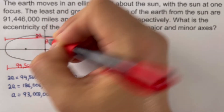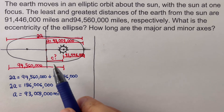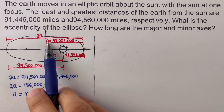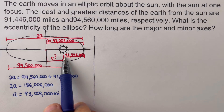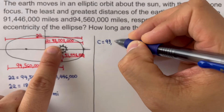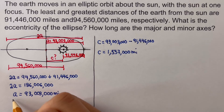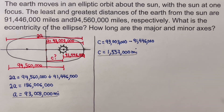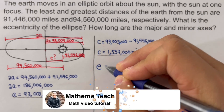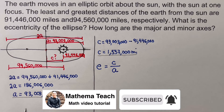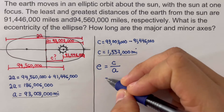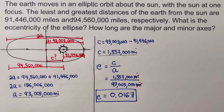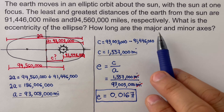To solve for c, we take the difference between a and the nearest distance of the Earth from the sun. Now we have both a and c — the two quantities needed for eccentricity. Plugging them into e = c/a, the eccentricity value is approximately 0.0167.